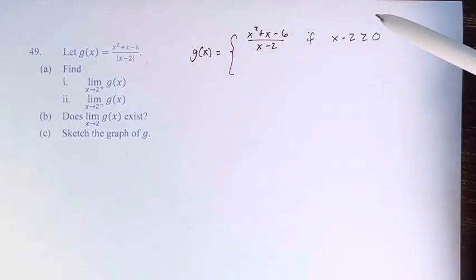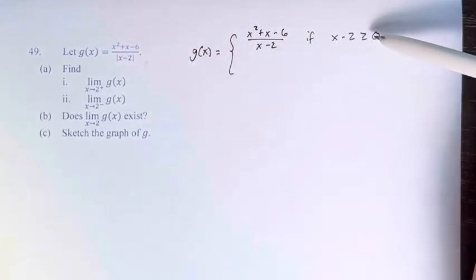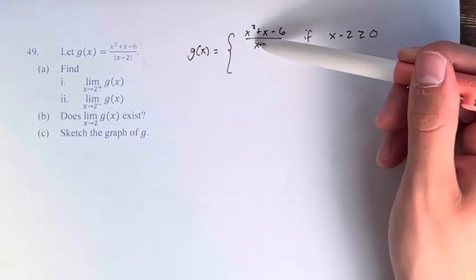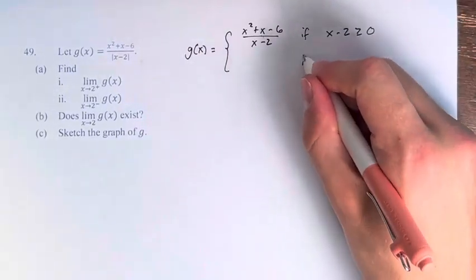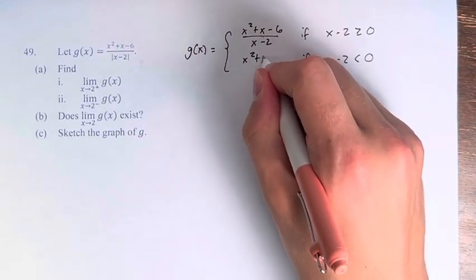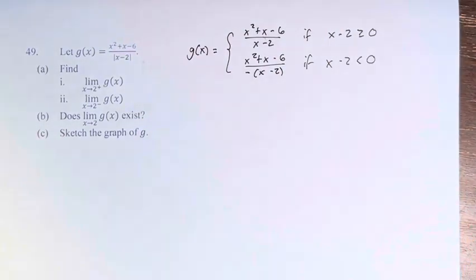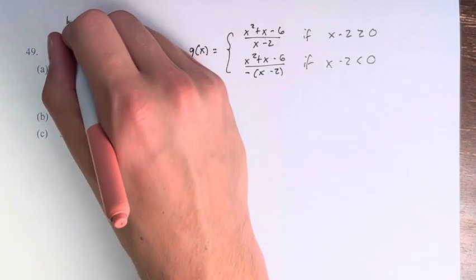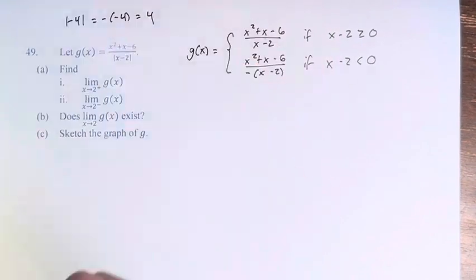Now, why? Well, if what's inside the absolute value is positive, then taking the absolute value doesn't do anything to x minus 2, and we just have that. Meanwhile, if x minus 2 is negative, then it's equal to x squared plus x minus 6 over negative x minus 2. It's the same way that the absolute value of negative 4 is equal to negative negative 4, which equals 4.